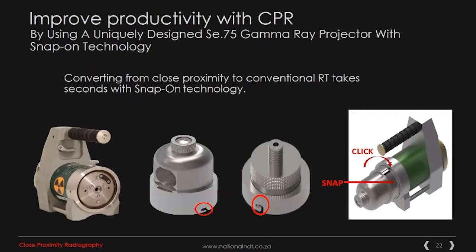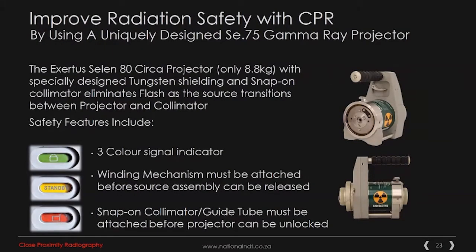The specialized container utilized for the isotope itself has unique technology — the front end of the projectors has multiple different projector heads which work on snap-on technology. To convert the projector from one type of usage to another is a matter of seconds, as opposed to minutes or hours. The container in question is the Exertus CELIN-80 CERCA projector. It is lighter than standard conventional projectors at 8.8 kilos, with specifically designed tungsten shielding and snap-on collimators which allow flash-at-source transitions between projectors and collimator.